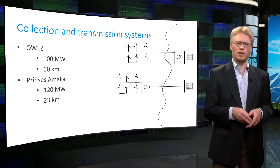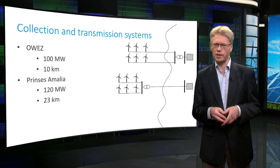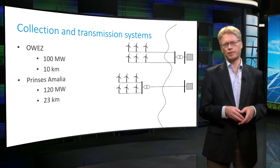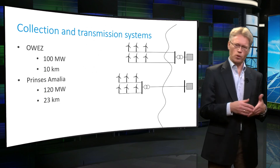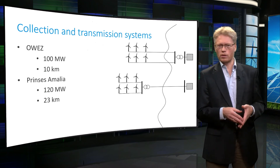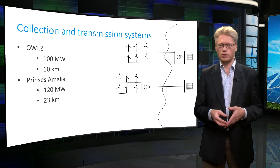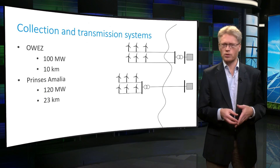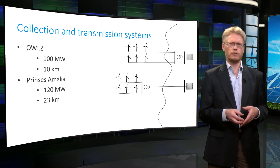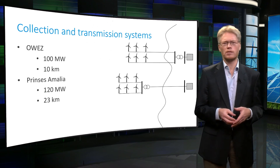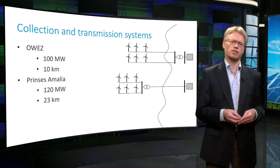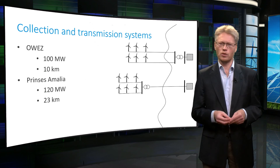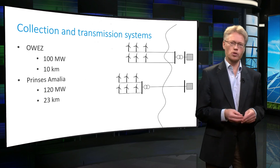The Princess Amalia Wind Farm has a power level of 120 MW and is located at 23 kilometers offshore. In this case, after the power collection, the voltage level is increased to 150 kV to transmit the power to shore. The voltage is increased to reduce the transmission losses. A higher voltage leads to a lower current, and the transmission losses are proportional to the square of the current.